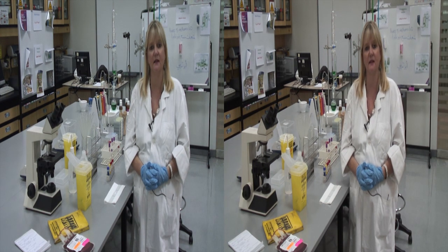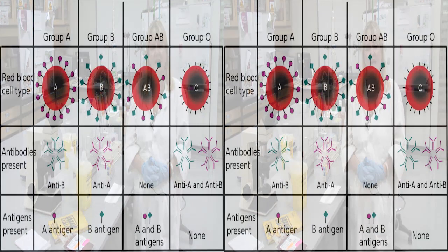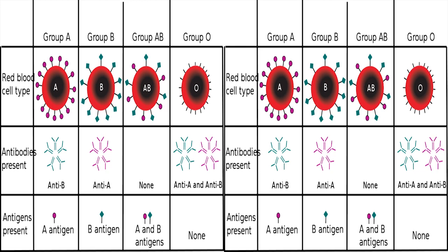In other words, if a patient or donor is a group A, he will have A antigens on the surface of his red cells and anti-B in the plasma. Similarly, a group B patient will have B antigens on the red blood cell surface and anti-A in the plasma.